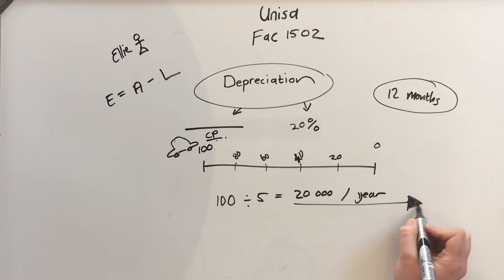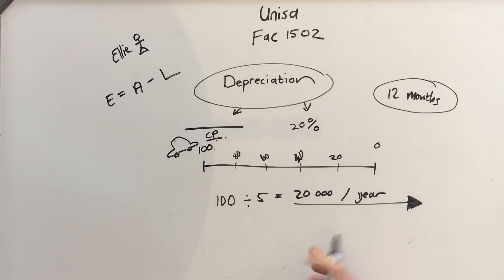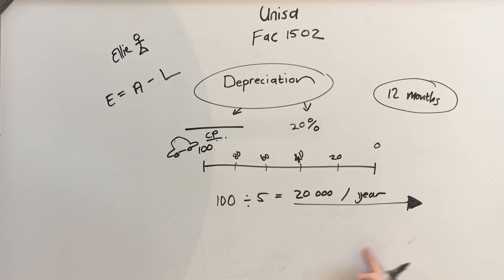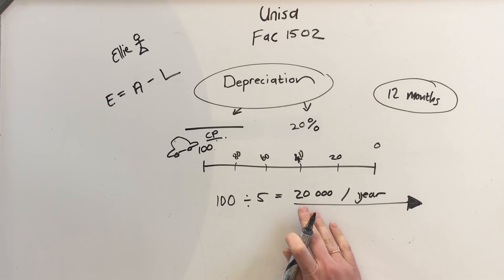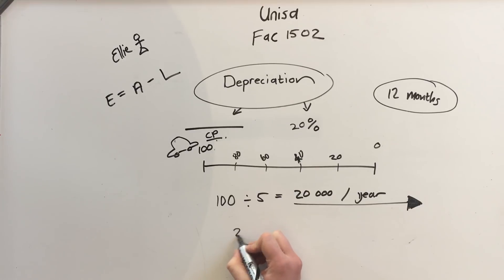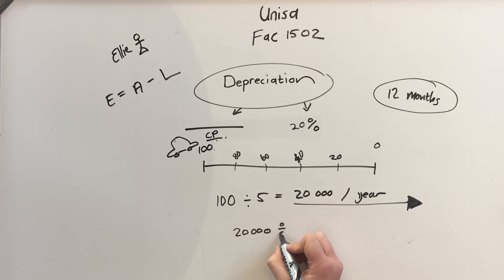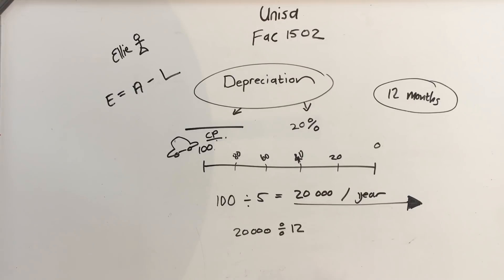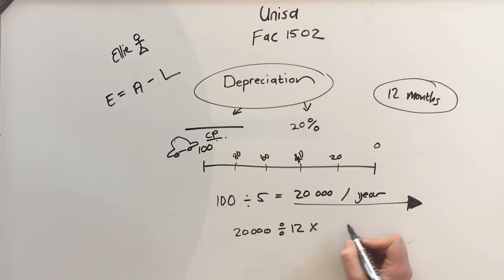If they split the year up — say they sell the car 8 months in — you just pro-rata it. Take the 20,000 for the year, divide by 12 to get the per-month depreciation, then multiply by the number of months given. So for 8 months it would be 20,000 divided by 12, times 8.